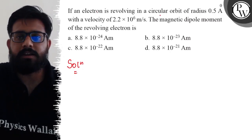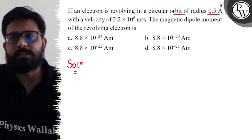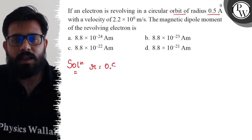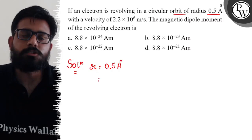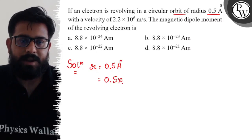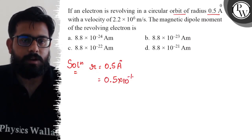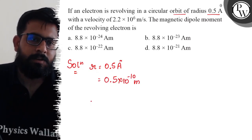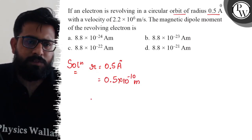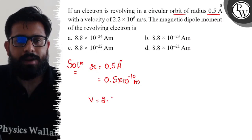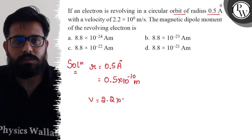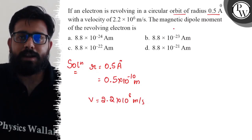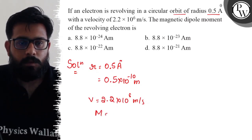In this question, we have an electron revolving in a circular orbit of radius 0.5 angstrom. Since one angstrom equals 10⁻¹⁰ meters, the radius is 0.5 × 10⁻¹⁰ meters. It is moving with a velocity of 2.2 × 10⁶ m/s. We need to find the magnetic dipole moment, capital M.